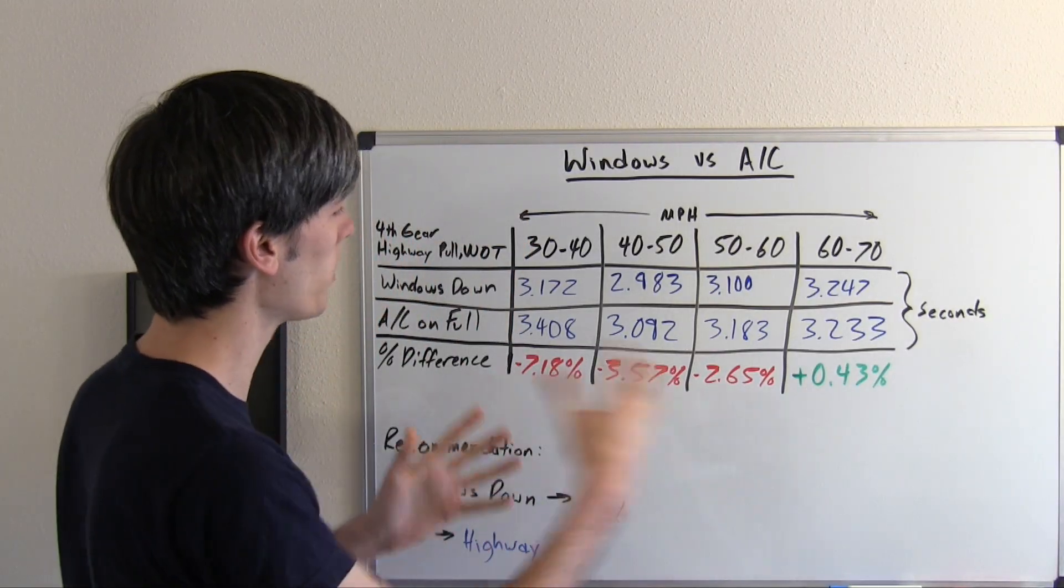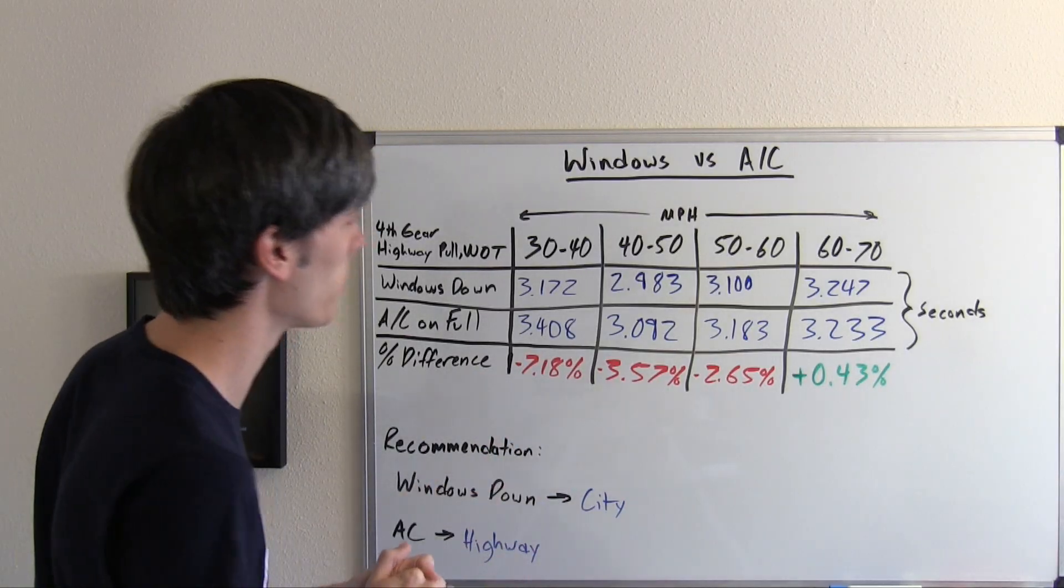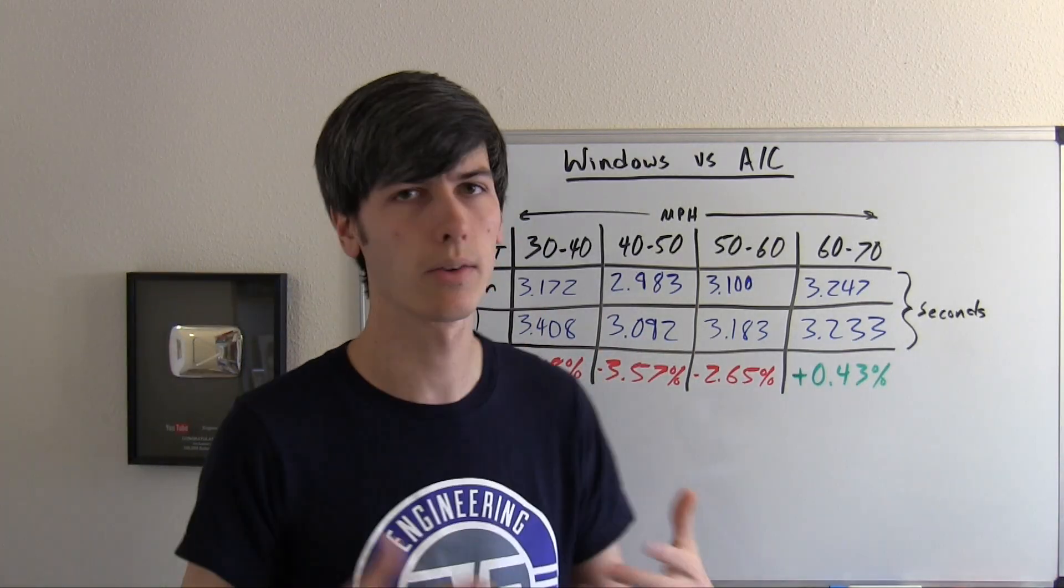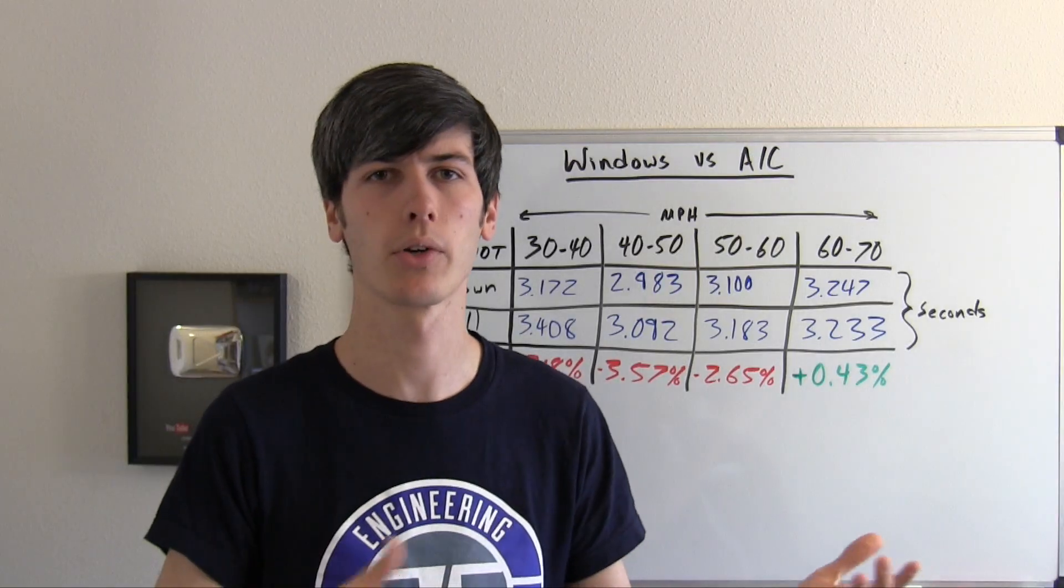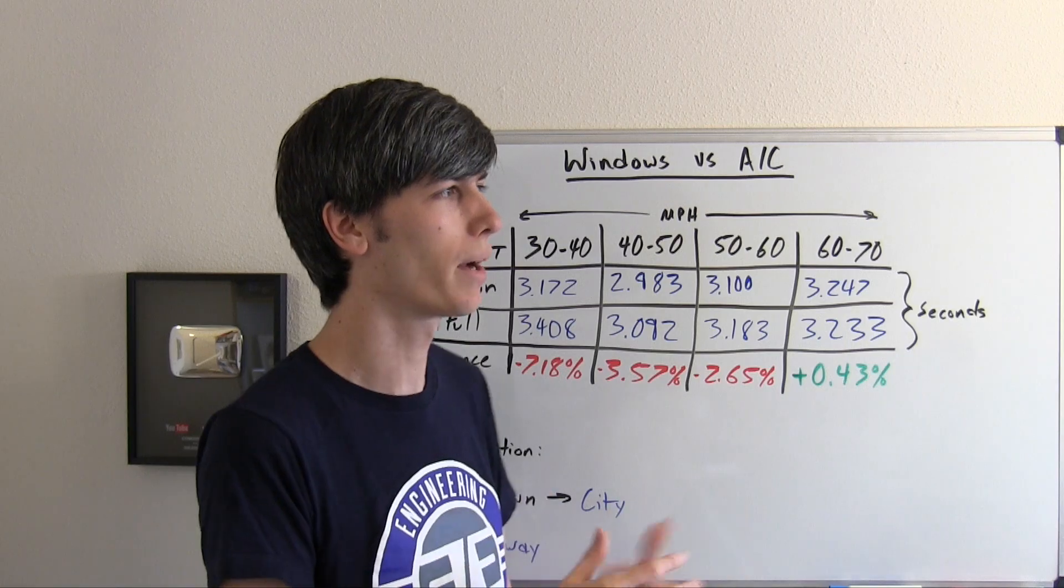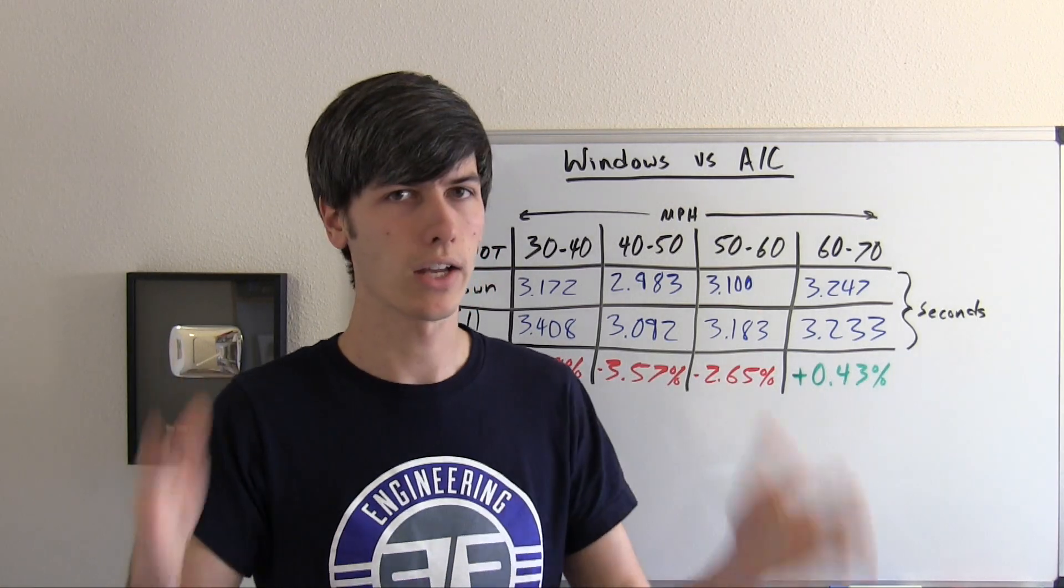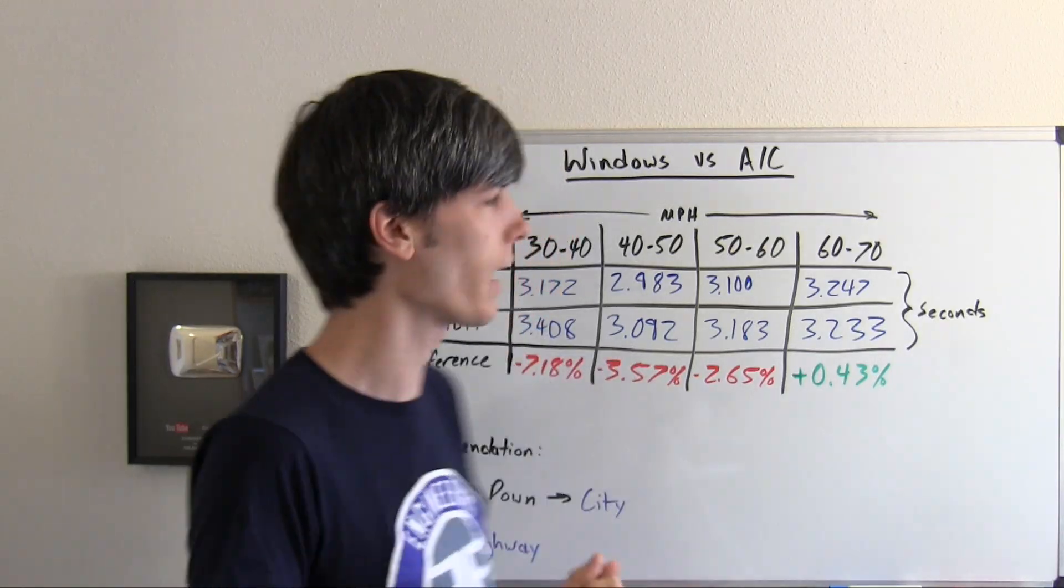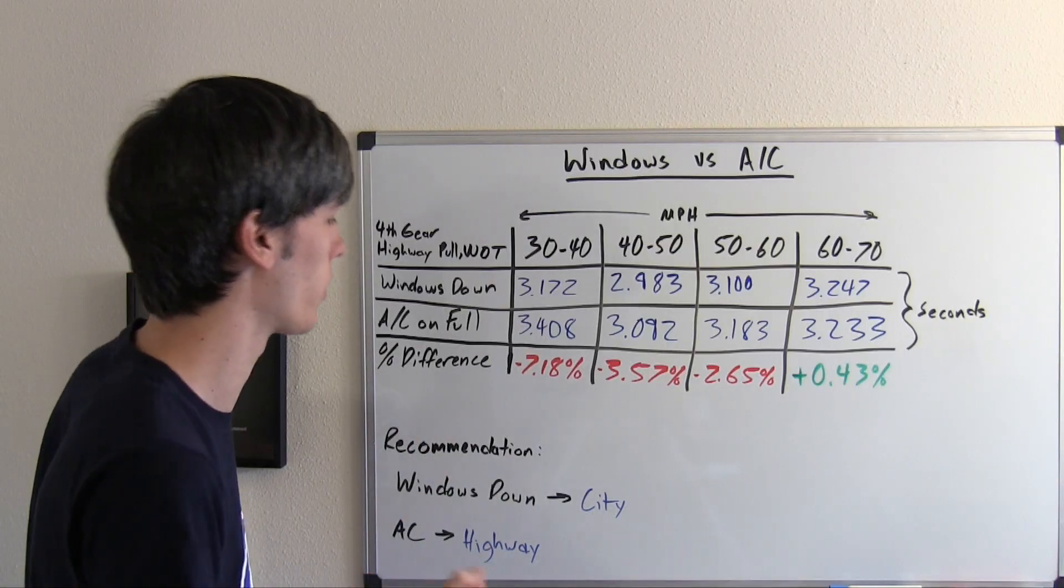That could be one thing that's going to influence these results. Now that said, I think drag is probably going to be the primary factor. One thing that you need to take into consideration is the fact that this is going to be different for every vehicle. Every vehicle's aerodynamics are going to be different with their windows down. My Integra probably is going to be minimally impacted by aerodynamics simply because it's just a two-door, so it's just got two windows that are going down versus four windows in like an SUV or something like that, which would probably have more of an impact.